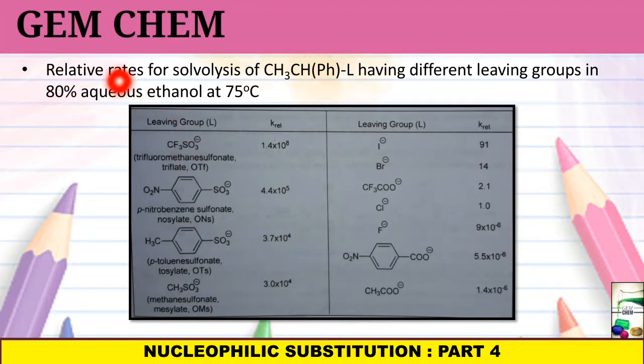Now, we see an example where relative rates for solvolysis of this compound having different leaving groups are given. From here only we can see the rate is much higher in case of this triflate. Whereas, the rate becomes least for this acetate group. So, from different reactions, we can get a little bit idea about the different reaction rates and its rate of leaving group. But this data changes from reaction to reaction, mechanism to mechanism.